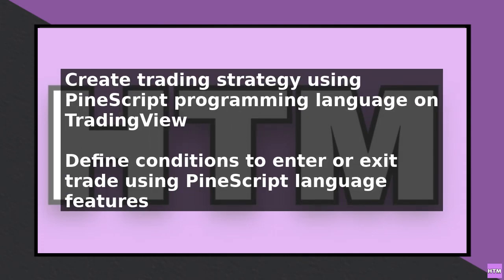Pine Script will allow you to define the conditions under which you want to enter or exit a trade. Once you have created your trading strategy, you can use TradingView's alert system to notify you when the conditions are met. To do this, you need to add an alert to your chart by clicking on the alert icon and selecting the condition you want to trigger the alert.